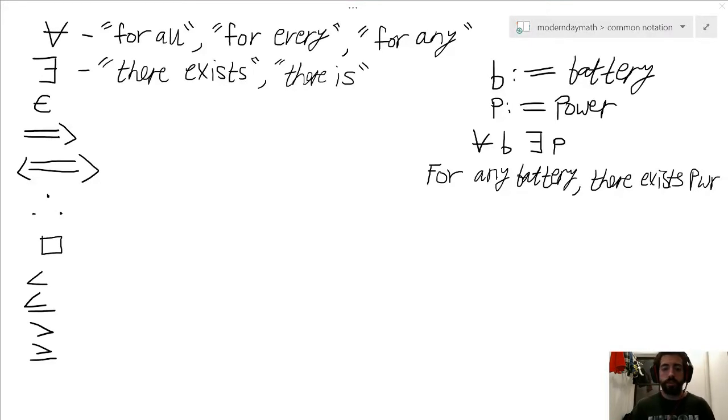Okay, so one example using these first two symbols would be with the English statement: for any battery there exists power. Now certainly we could have a discussion about the truth of the statement depending on how many batteries we have and whether they're alive or dead, but for the purpose of this example it's just a matter of rewriting it in a more compact form. So if we designate lowercase b to the word battery and we designate lowercase p to the word power, we can truncate 'for any battery there exists power' into this nice concise statement. Now it would literally read upside down A lowercase b backwards E lowercase p, but we know that it will really just be the English statement for any battery there exists power, or for every battery there is power, and so on and so forth.